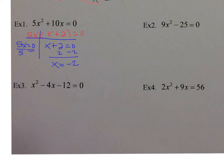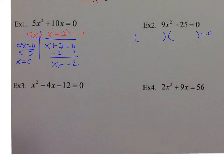Let's take a look at number 2. I have 9x squared minus 25 is equal to 0. I look for a GCF — I don't see one. The next thing I look for is difference of two perfect squares. I see 9x squared and 25 — those are perfect squares, it is a difference, and I have two terms. So I set up two parentheses with plus and minus. Taking the square root of each, we get 3x and 3x. Square root of 25 is 5, so it's 3x plus 5 times 3x minus 5.